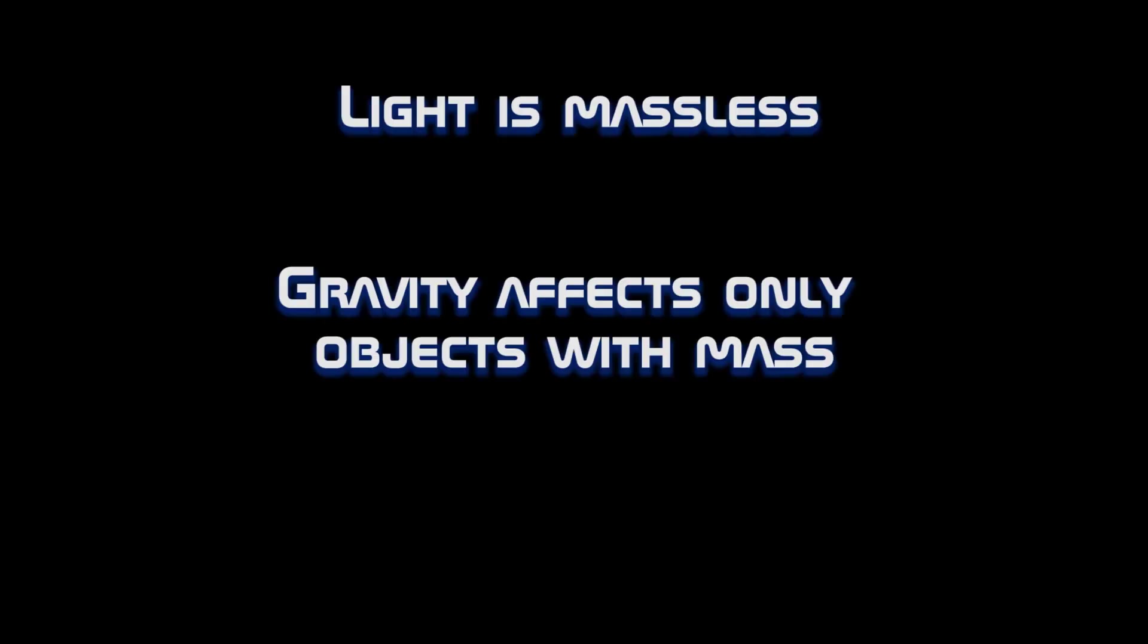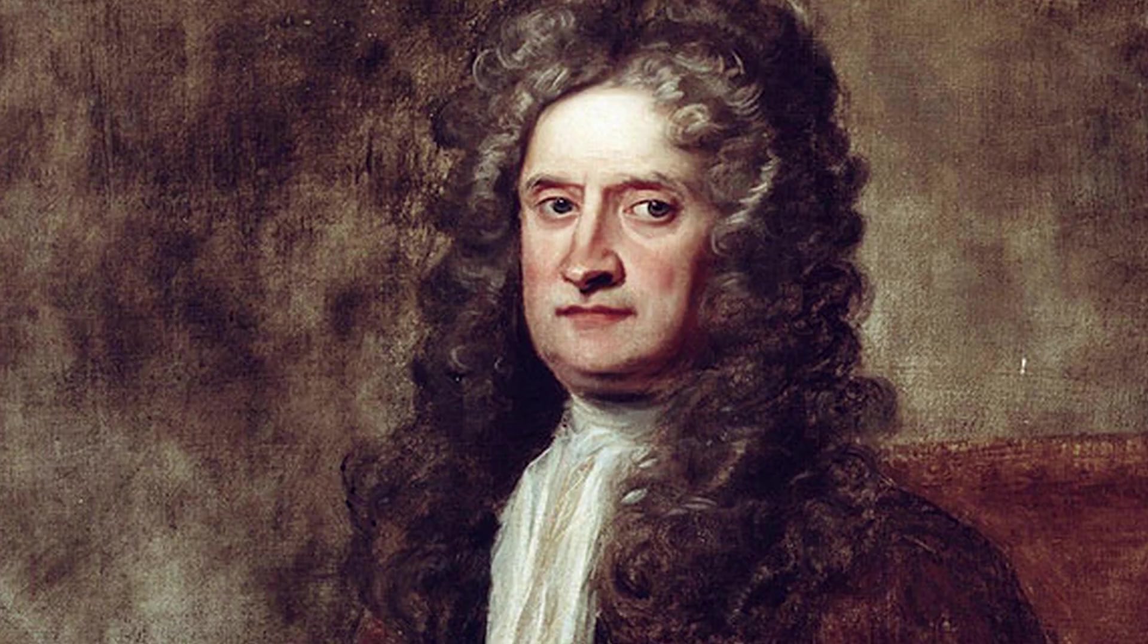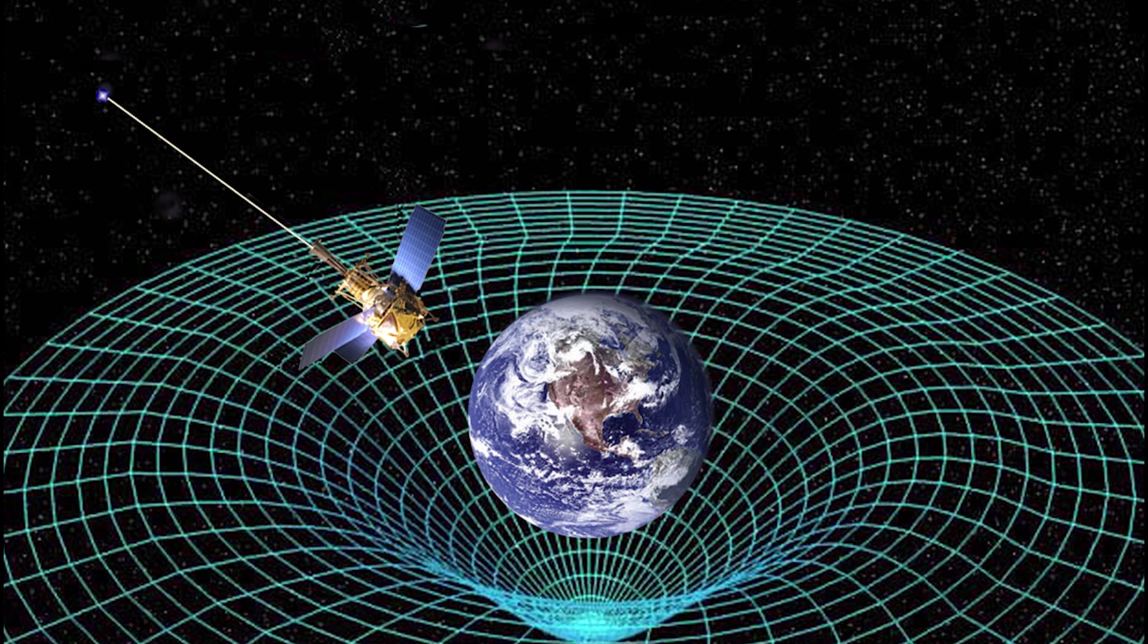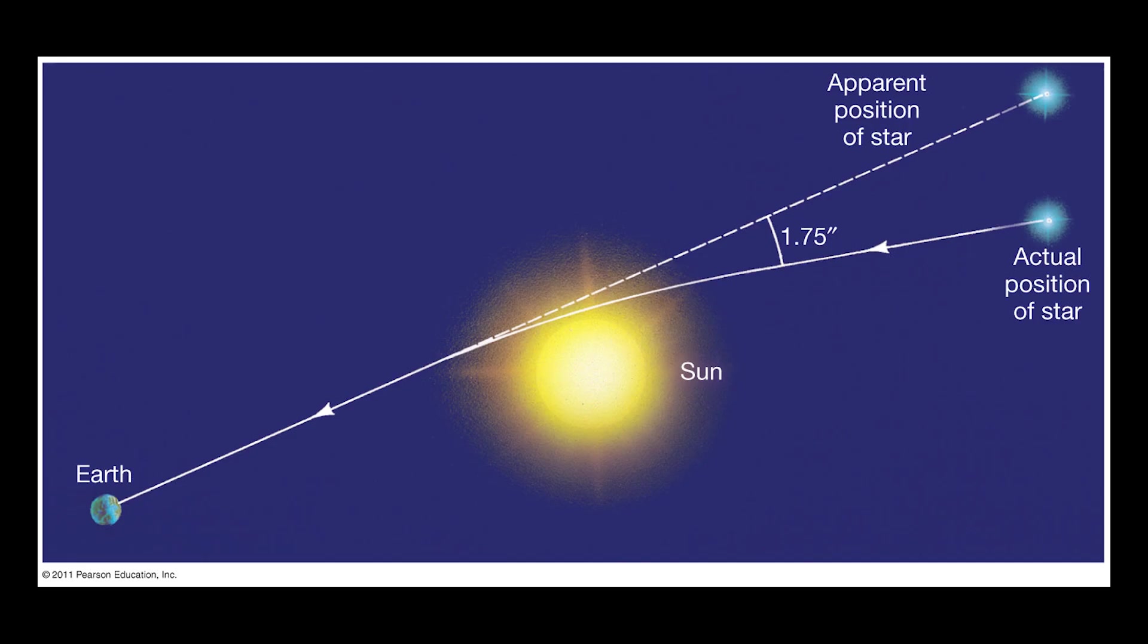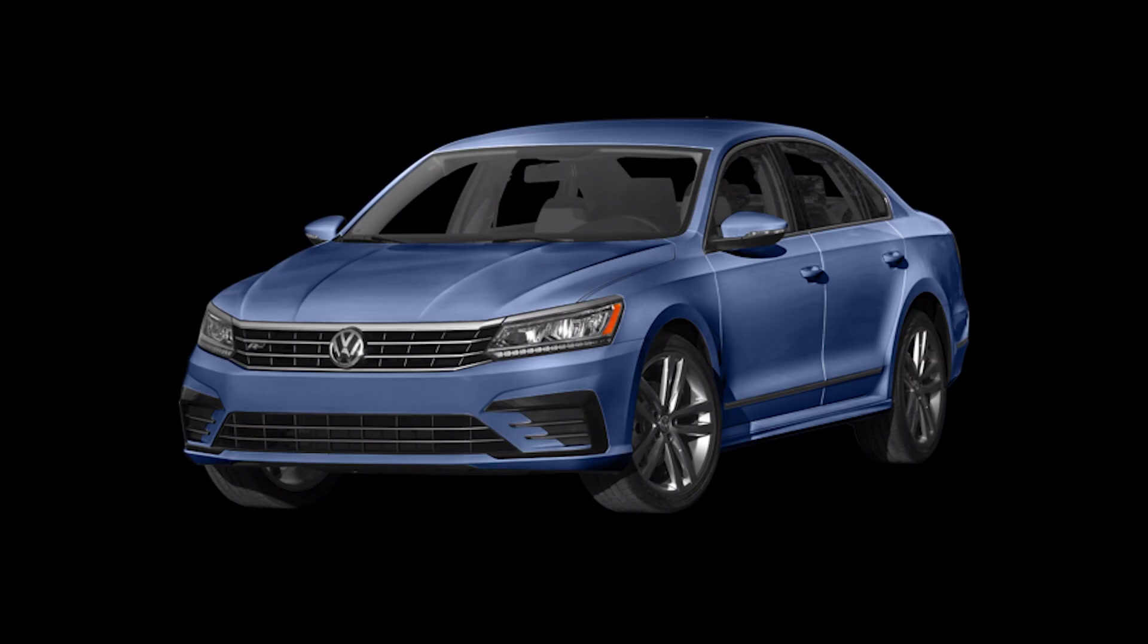Therefore, there is no light coming to our eyes from that region, and an absence of light is black. But hold on, you might say, how can light be influenced by gravity if it is massless, and by definition gravity affects only objects with mass? Well, that's what Newton thought. However, Einstein's theory of relativity says that gravity bends spacetime, and even light is affected by that curvature.